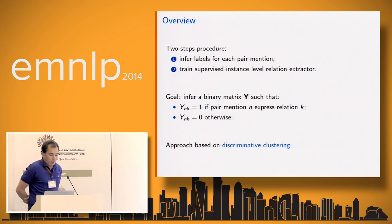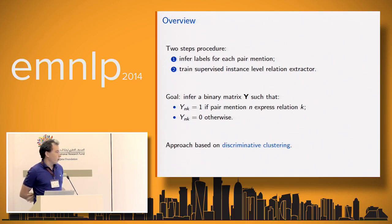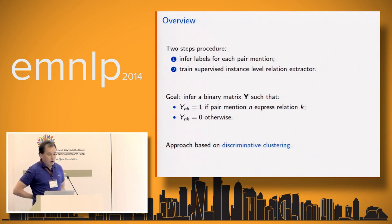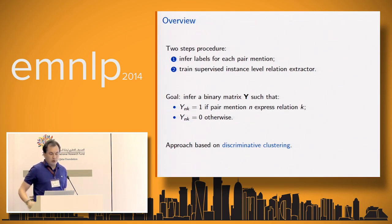Here is how we learn to extract relations from this data. First, we infer the latent labels for each pair mention using distance supervision. Then, using these latent labels, we train a supervised instance-level relation extractor — basically a multi-class logistic regression. Our goal is to infer a binary matrix Y such that Y_nk equals one if pair mention n expresses relation k, and zero otherwise. Our approach is based on discriminative clustering.